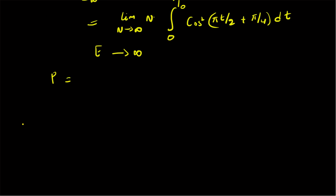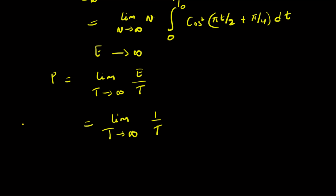Power is defined as the limit as T tends to infinity of energy divided by T. Based on this definition, it becomes the limit as T tends to infinity of (1/T) times the integral over the whole interval of |x(t)|² dt.